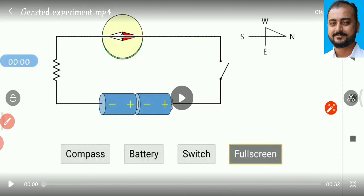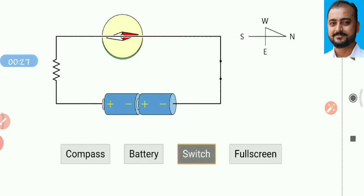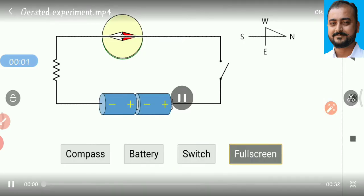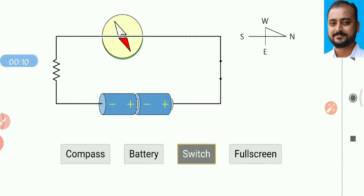Observe this video carefully. When the key is connected, current starts to flow in the circuit and the compass shows deflection. As the key gets disconnected, the compass resets to its original position. As you change the position of the battery and switch it on, again you will find deflection in the magnetic needle. When the key is reconnected, the red symbol points downward; as the key is disconnected, it returns to its original position.